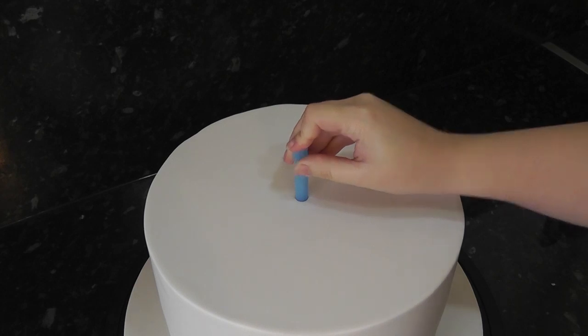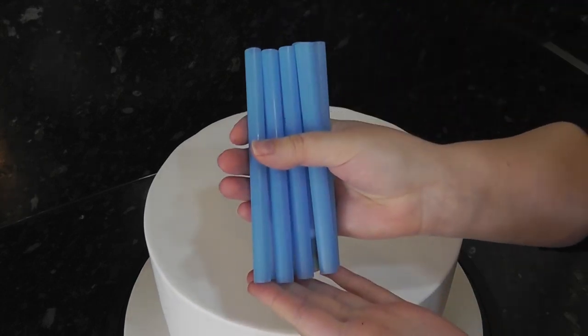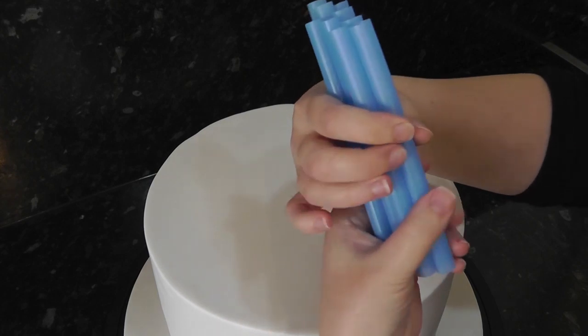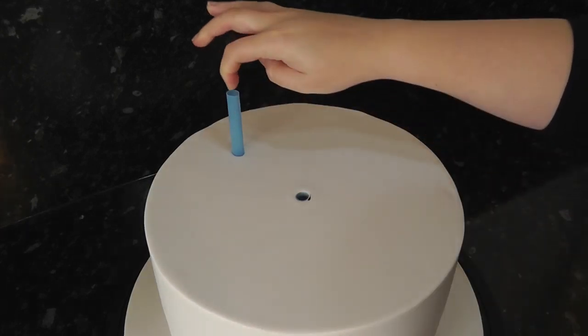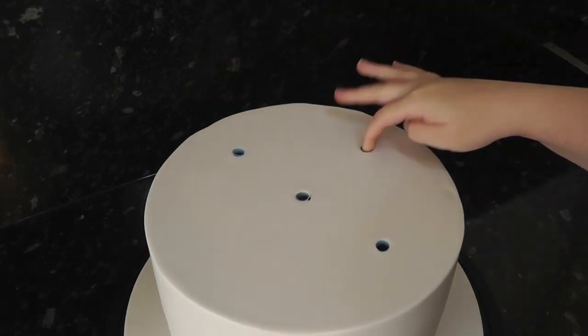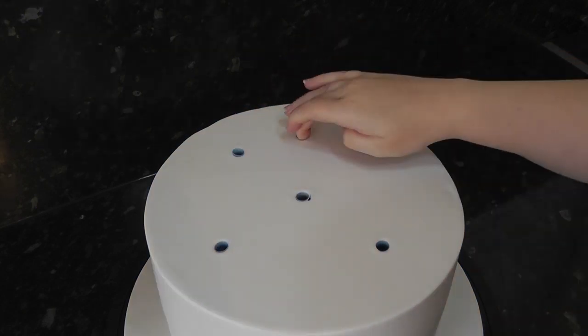We are building the whole thing before continuing to decorate, so place your support in the center and cut all others to the same height. The cake above this is going to be 8 inch, so I am using 8 supports around the outside and one in the middle.